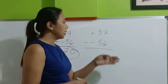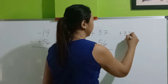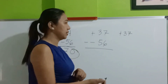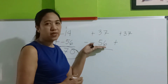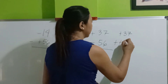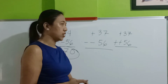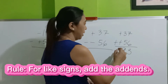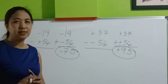Another example. First step, copy the minuend — let's copy positive 37. Next, minus becomes plus. Next, turn this into its opposite sign — negative becomes positive. Then follow the rule in adding integers. So that's now positive 96.